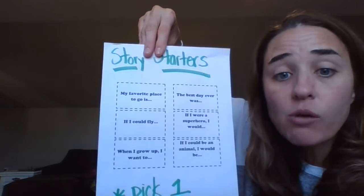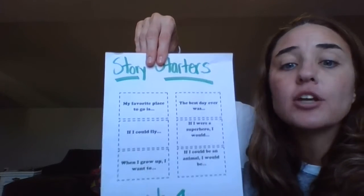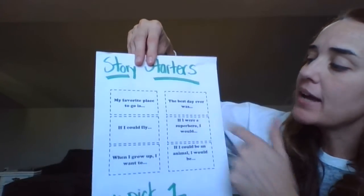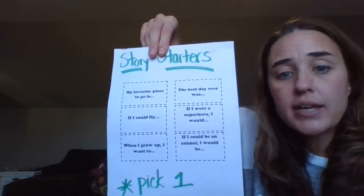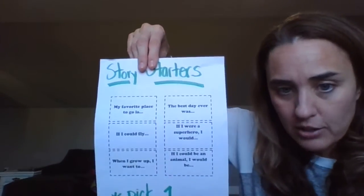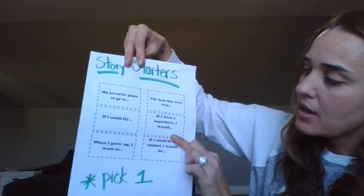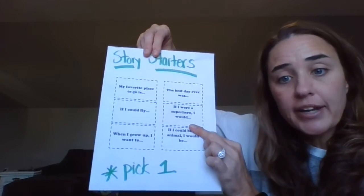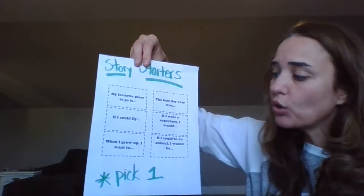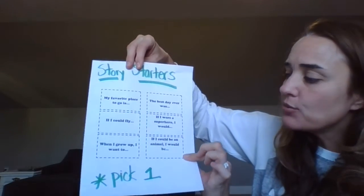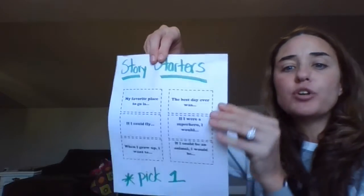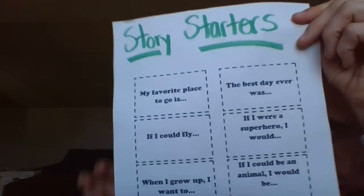Another option is 'When I grow up I want to' and you can write a story about that. Or 'The best day ever was' and write a story about that. There's also 'If I were a superhero I would' and you would continue your story from there. And the last one is 'If I could be an animal I would be' and you would write a story about that.